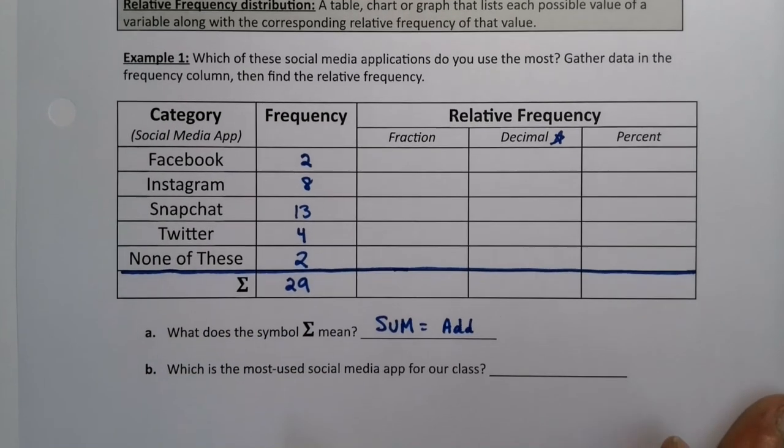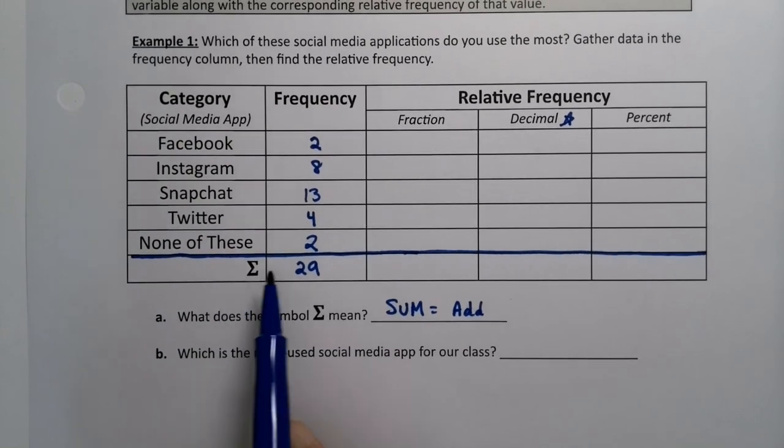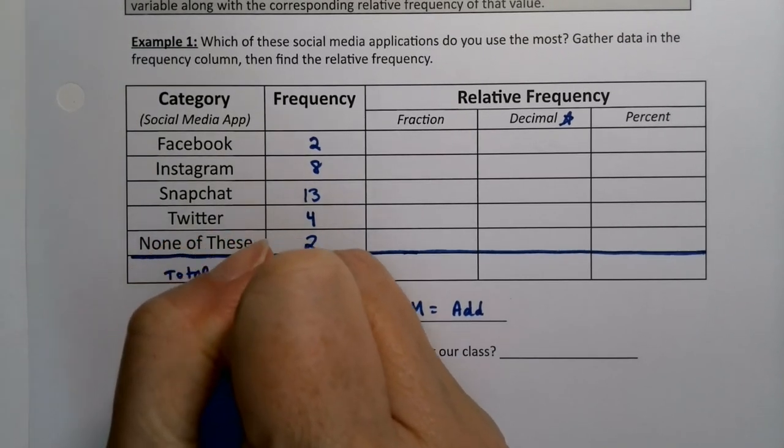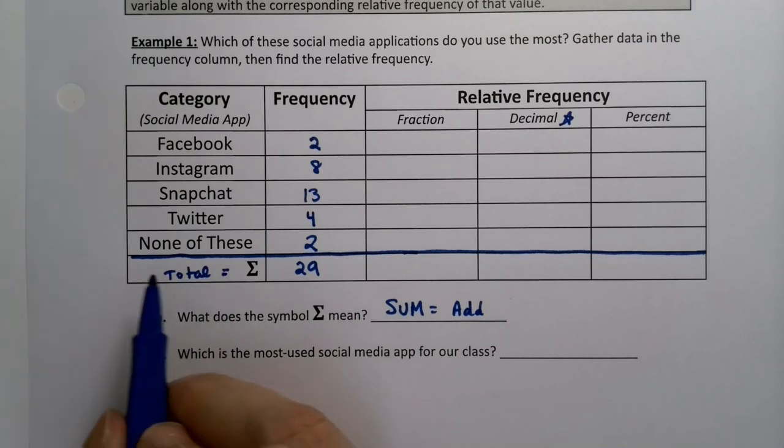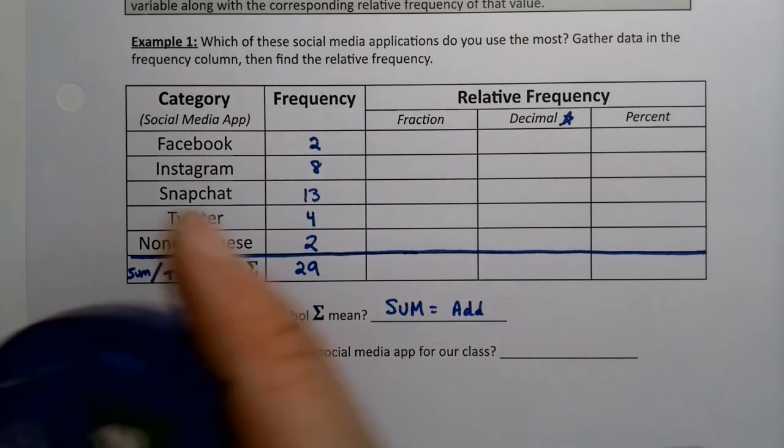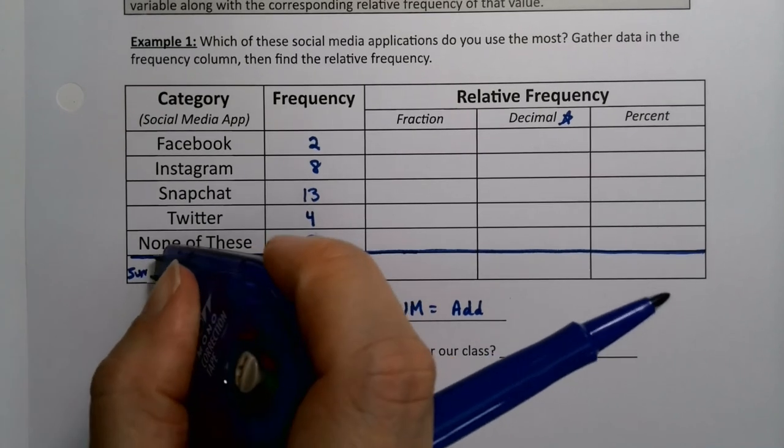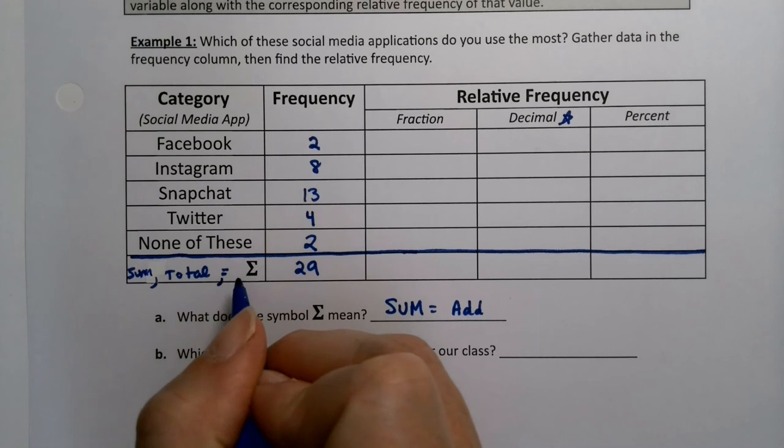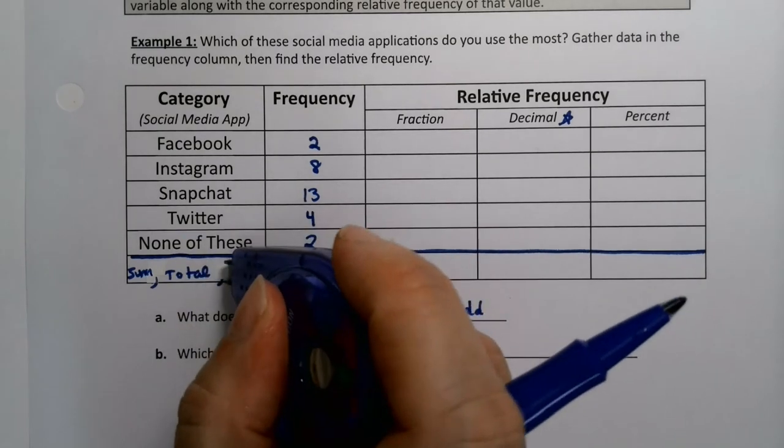That's the total row, so you could also say total in here. Total or the sum - it means you're going to add. Sum is a frequent word we'll use, total is a frequent word we'll use, or that little Sigma sign, and they all mean the same thing. It means add above.